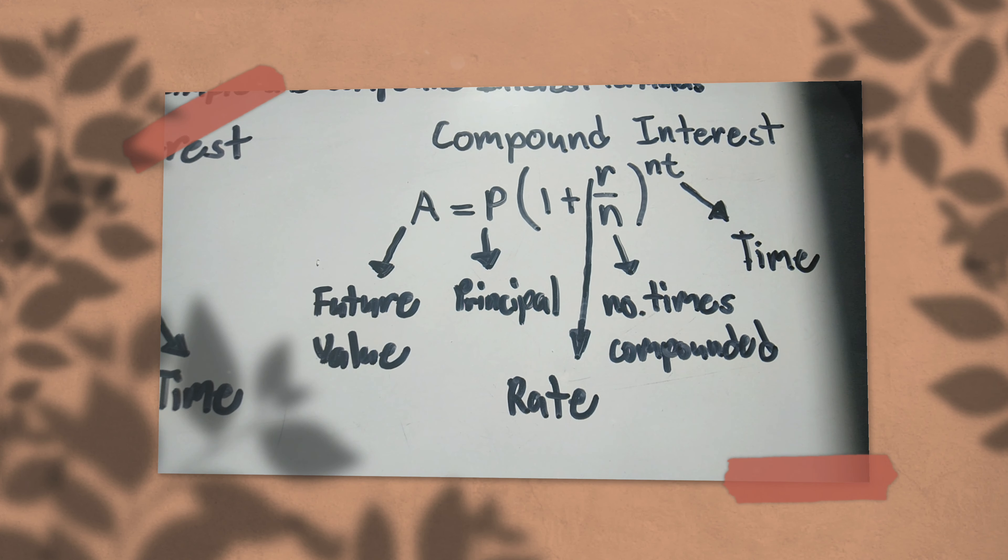Then the 1 is constant. R is the interest rate - you convert it to decimal again. N is the number of times compounded - this is the number of times compounded in 1 year.